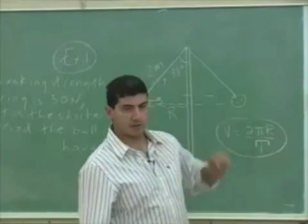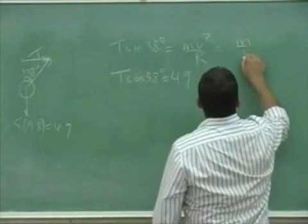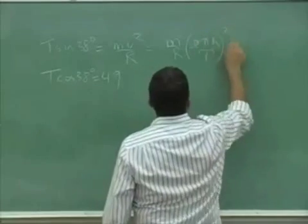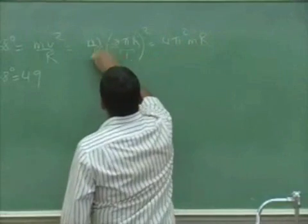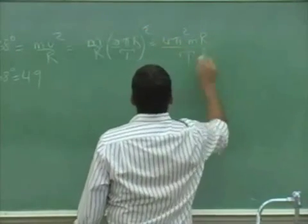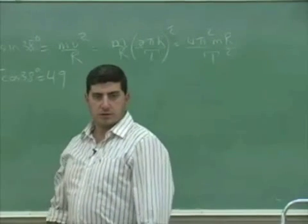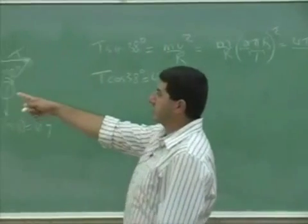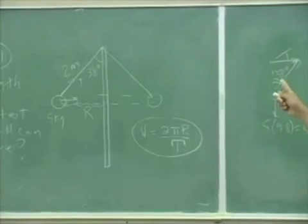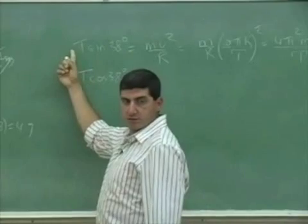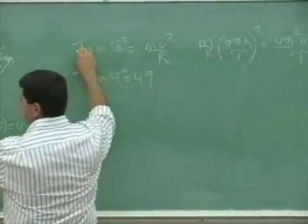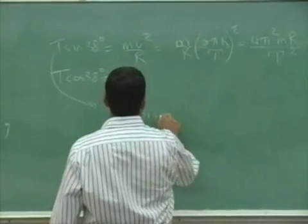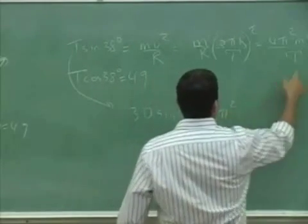Substitute v = 2πr/T into the centripetal force equation. One of the r's cancels, leaving r divided by T squared. Now substituting the breaking strength — tension equals 30 newtons — we get 30 sine of 38° equals 4π² times mass m times r over T squared.